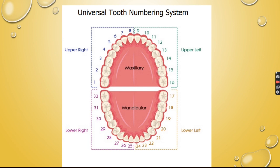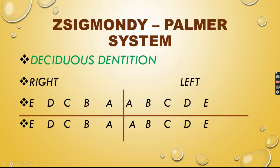The second system is the Zsigmondy-Palmer system. In 1947, a committee at the American Dental Association recommended this system as the numbering method of choice. It is called a numerical quadrant system and was initially meant for permanent dentition only, but in 1874 it was adopted for primary dentition as well. It is one of the oldest and most widely used systems, favored by orthodontists, dental students, and practitioners in the United Kingdom.